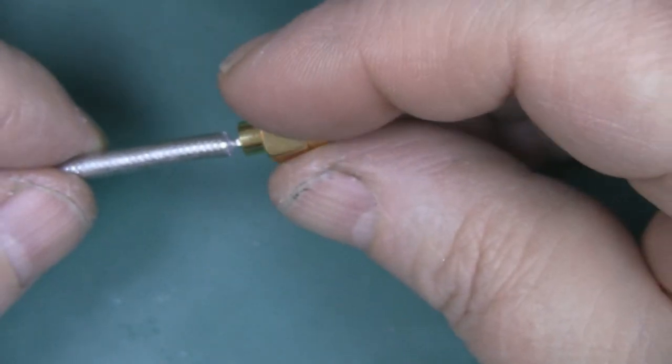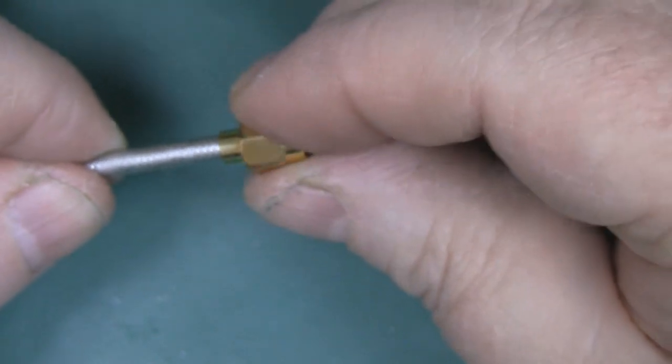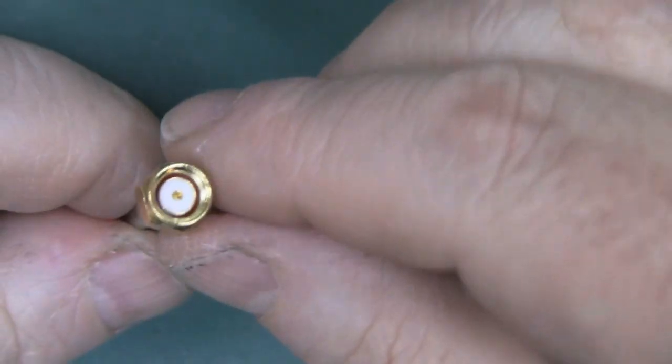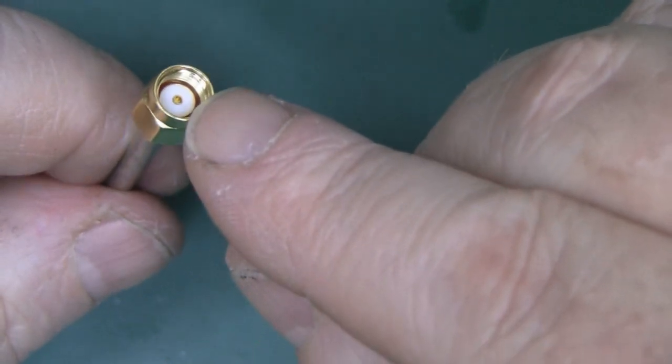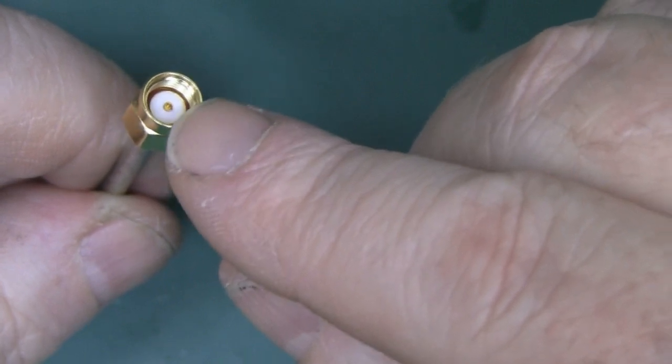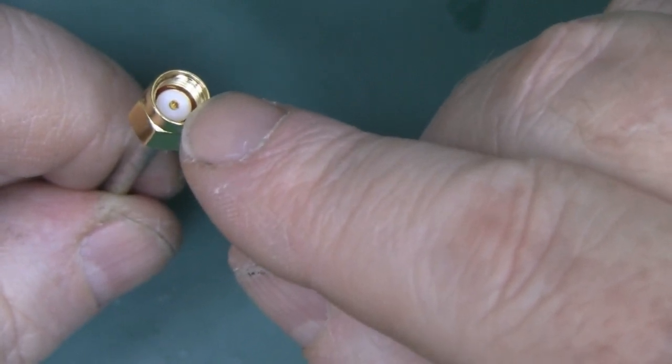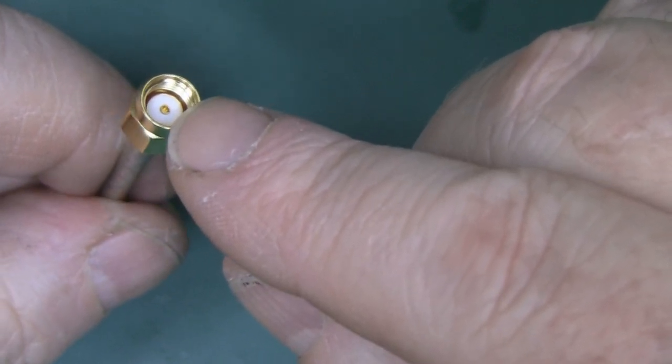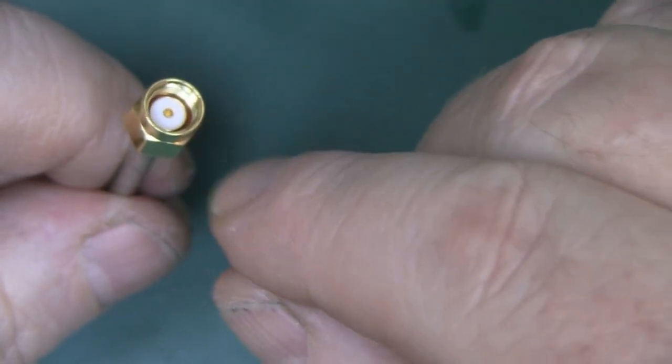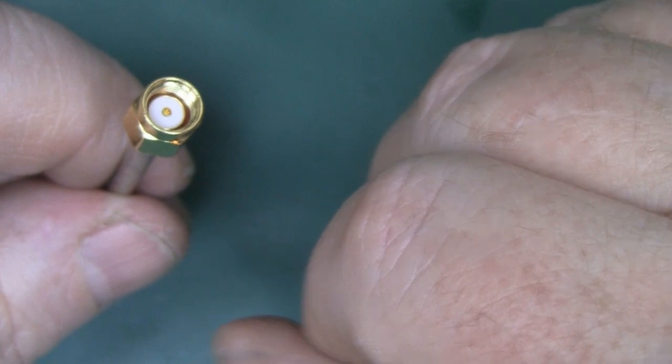Next, get your SMA connector and gently push it onto the coax so it won't go in anymore. If you got it cut off at exactly two millimeters initially, you should see that pin line up quite nicely with the edge of the dielectric there, not protruding too far and not stuck too far into the dielectric.